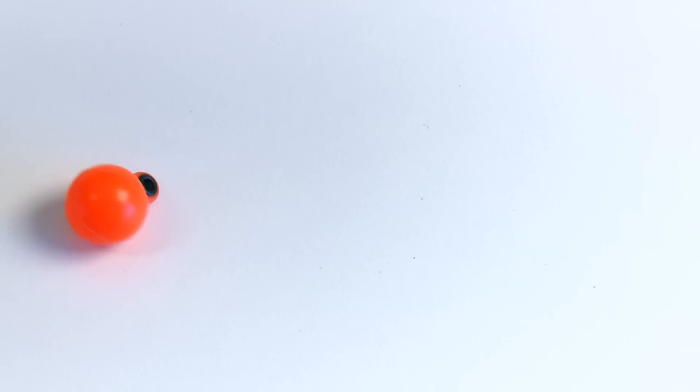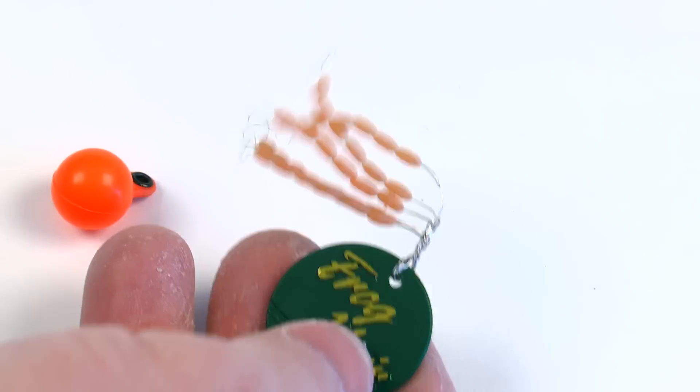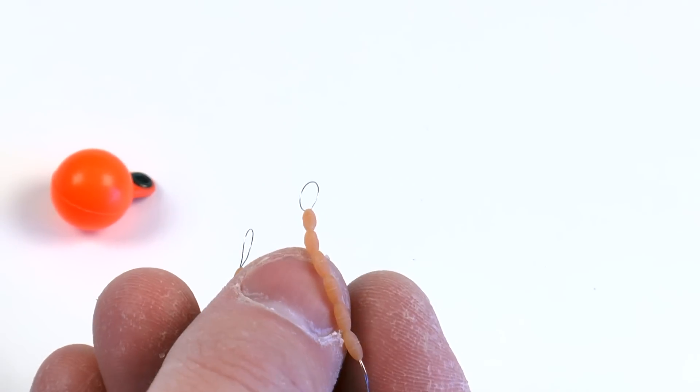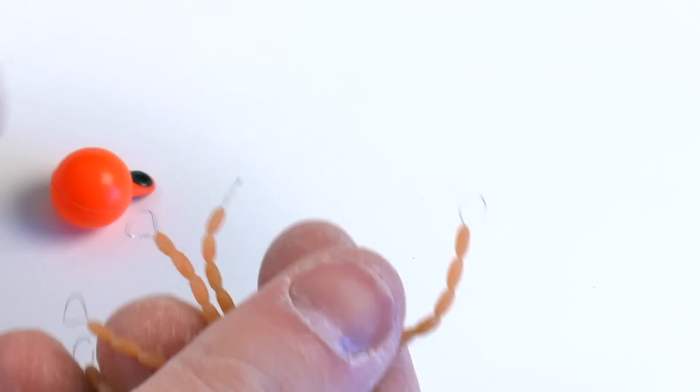So we're going to need a couple different things. We're going to need our thingamabobber and also our frog hair indicator retainers. And we want the large size. We don't want the small size. If they're too small, they'll just slide through the hole of the grommet of the indicator. So we want the large size.